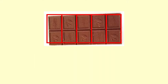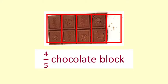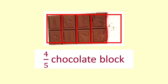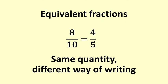Say we decided that the whole block was made up of five pieces instead of ten. Each of the pieces is made up of two of the smaller pieces. Each fifth is the same as two tenths. Then we would call this four fifths of a block of chocolate. The amount of chocolate in the part block has not changed. Eight tenths and four fifths are equivalent fractions. They describe the same quantity in different ways.